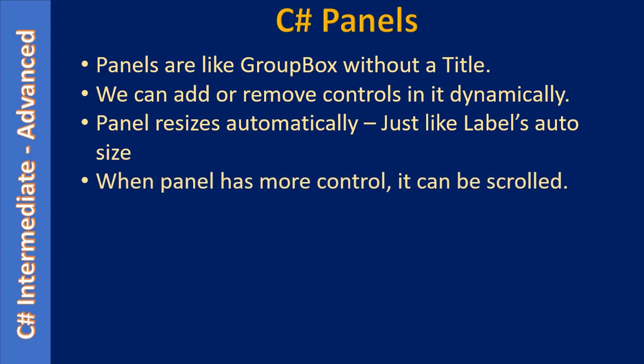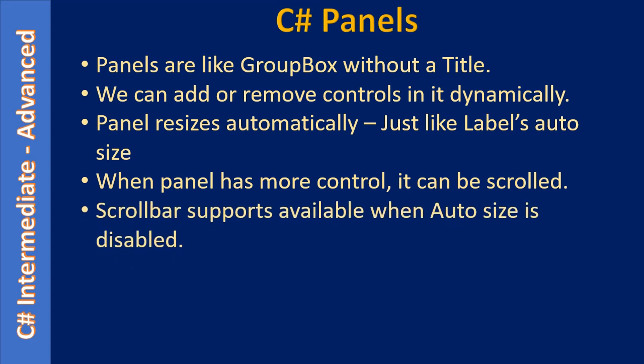When a panel has more controls it can be scrolled, but to make use of scrolling we have to turn off auto size. For example, if a panel has five text boxes and we add a sixth text box that cannot be visible in the panel's current size, there is a property which will allow the panel to grow or shrink. To show the sixth control the panel will automatically grow, and when you remove that control the panel will shrink.